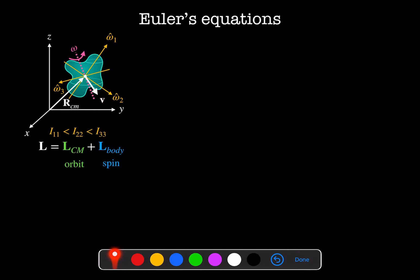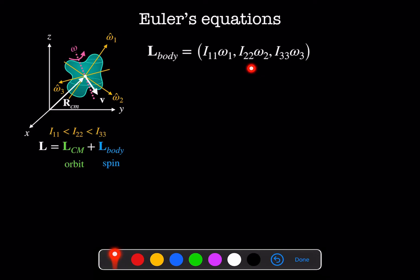However, if the axis of rotation doesn't stay fixed with respect to the lab frame, calculations in the lab frame become challenging and involve a lot of algebra. So using the body frame turns out to be easier. In this frame, the angular momentum of the body is just i11 times omega-1 in the omega-1 direction, i22 times omega-2 in the omega-2 direction, and i33 times omega-3 in the omega-3 direction.